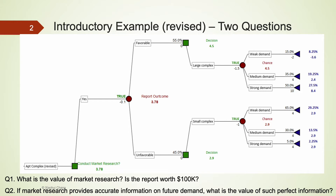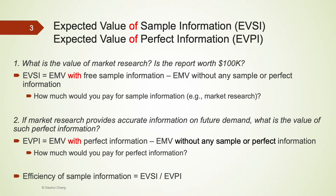In our revised Apartment Complex example, the optimal decision is to spend $100k on the market research. Depending on the outcome of the report, the company either builds a large or a small complex. Here are two questions to consider. First, what is the value of the market research — is the report worth $100k? Second, if someone knows exactly what level of demand will happen in the future, how much will the company be willing to pay for such perfect information? These two questions can be answered using EVSI and EVPI.